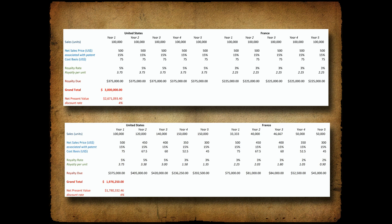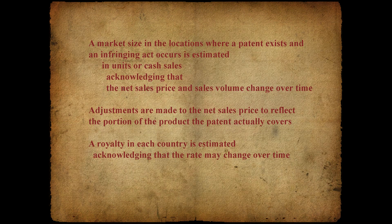It's those differences that are the subject of so many hours of negotiations in these agreements. That's how royalty calculations and patent valuations are generally done. The form and details of the spreadsheet may vary, but the components are all there: a market size in locations where a patent exists is estimated in units or cash sales, acknowledging that net sales price and sales volume will change over time. Adjustments are made to the net sales price to reflect the portion of the product the patent covers. A royalty in each country is estimated, and the overall cash flow during the life of the patent or agreement is estimated.